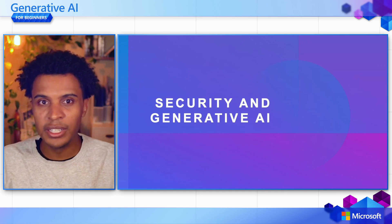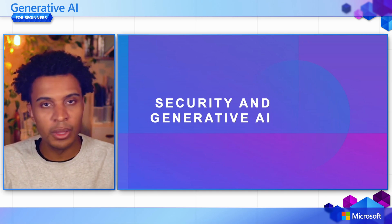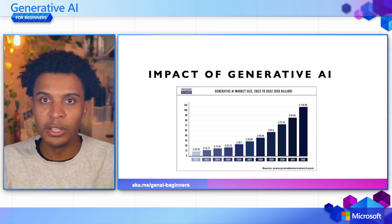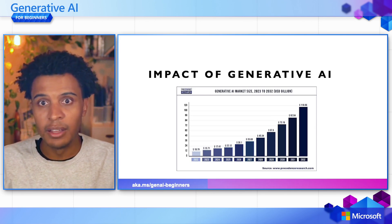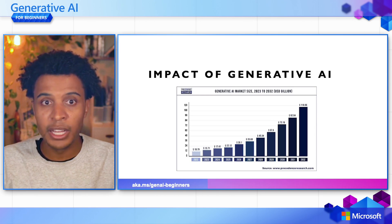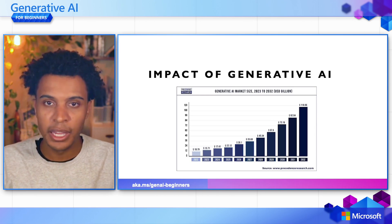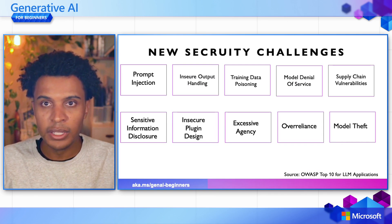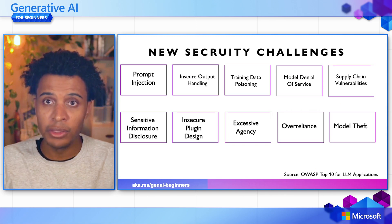Let's start with security and generative AI and how these two topics relate. The impact of generative AI is significant — this diagram shows the market size of generative AI applications being built. As we have more generative AI applications, we should have more secure generative AI applications. Taking from the OWASP list — an authority in cybersecurity — they have defined 10 significant threats or security challenges for large language model applications.